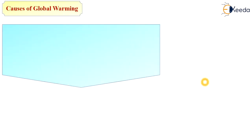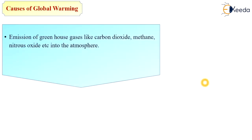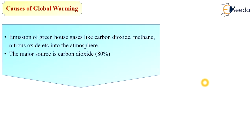What are the causes of global warming? The main cause is the emission of greenhouse gases like carbon dioxide, methane, nitrous oxides, etc. into the atmosphere. The major source is carbon dioxide, which accounts for about 80% of greenhouse gas emissions in the atmosphere, with 20% coming from methane and nitrous oxides.